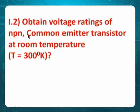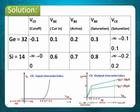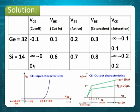Problem 2: Obtain voltage ratings of an NPN common emitter transistor at room temperature. Looking at the input characteristics — voltage on the x-axis for convenience, to show it behaves like a diode. From minus infinity to 0 is cutoff. At 0.6 is cut-in voltage, 0.7 is active, 0.8 is saturation for silicon. For germanium: minus 0.1, 0.1, 0.2, 0.3. On the output side, minus infinity to 0.2 is the range for saturation in silicon.